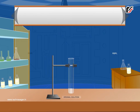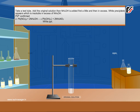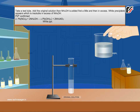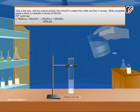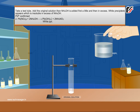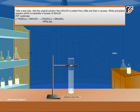Take a test tube and add the original solution. NaOH is added first a little and then in excess. A white precipitate appears which is insoluble in excess of NaOH. This is noted as a further observation for Lead Ion identification.